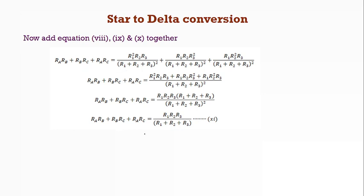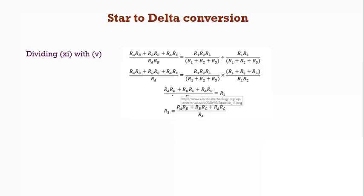I am just going to add up all these equations. And this equation number 11 constitute of RA RB plus RB RC plus RA RC divided by this. So if I want the resistance R3, I can just divide by this RE. Divide by R1 R2 by R1 plus R2 plus R3, we will be getting this sort of expression.